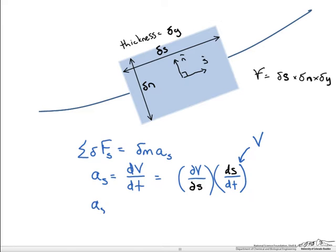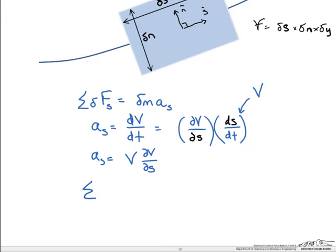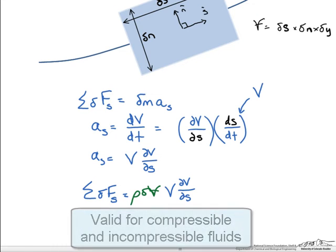This term right here is just the velocity in the streamline direction. So we can rewrite acceleration as the velocity in the streamline direction times the change in velocity per change in s. Newton's second law now looks like the following, where we have rewritten the acceleration as velocity times the differential, and we can pull the density out of the mass term.